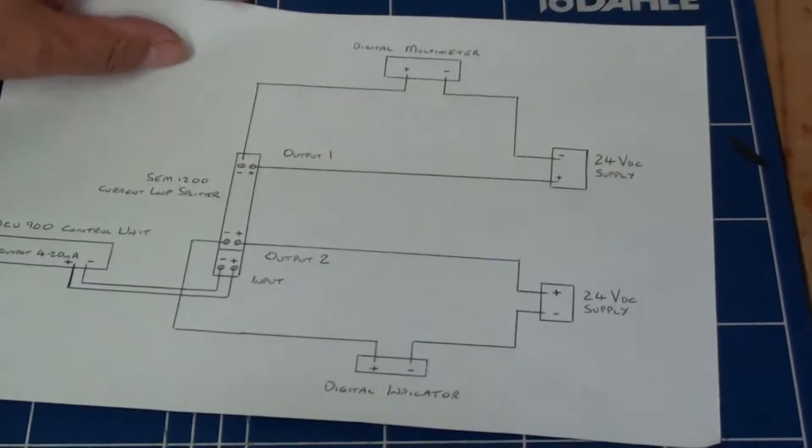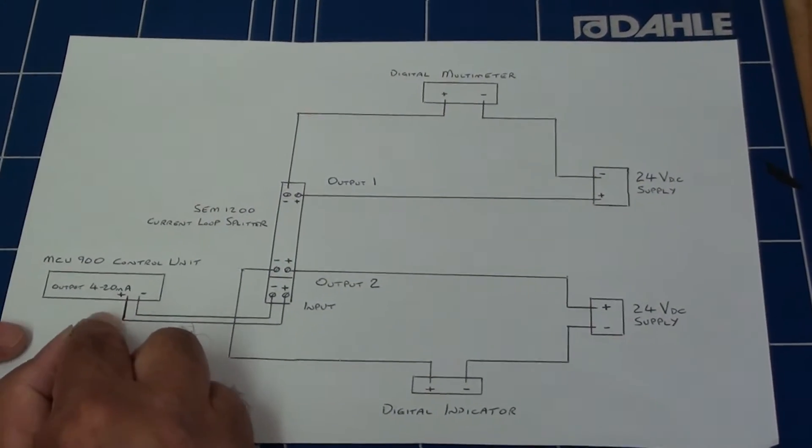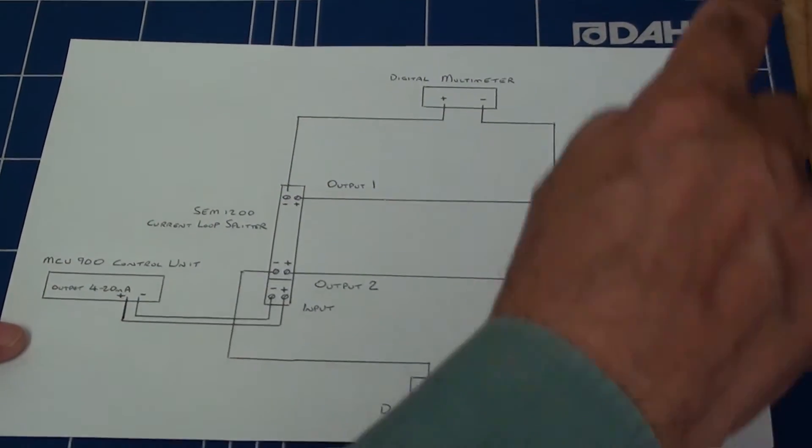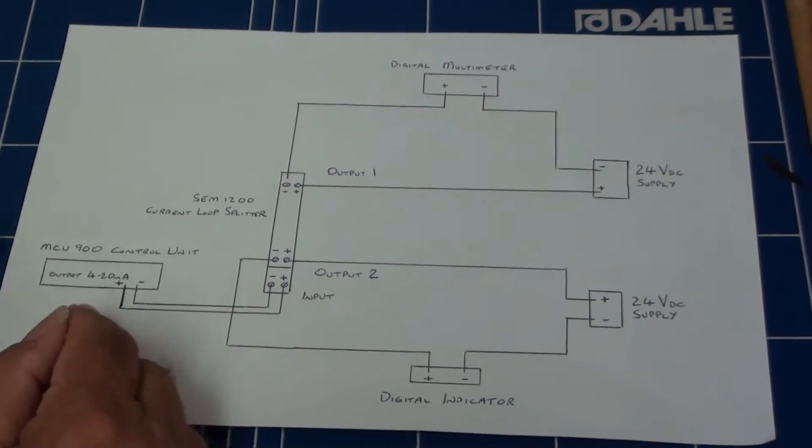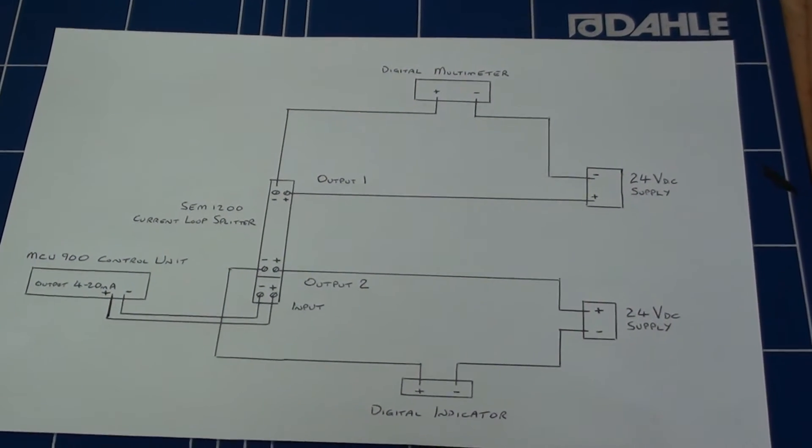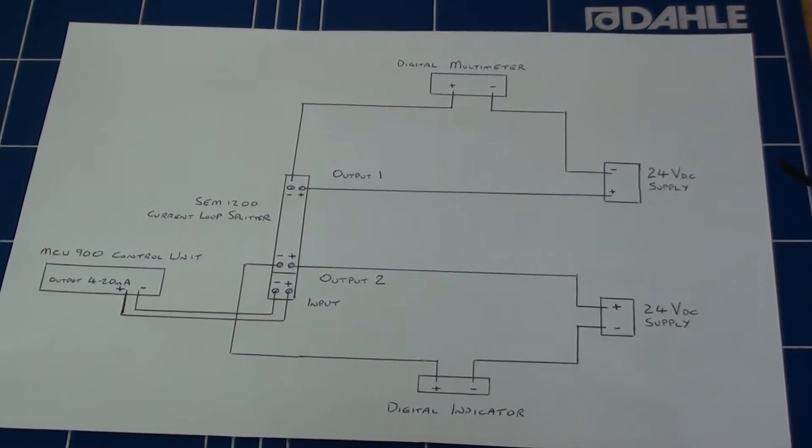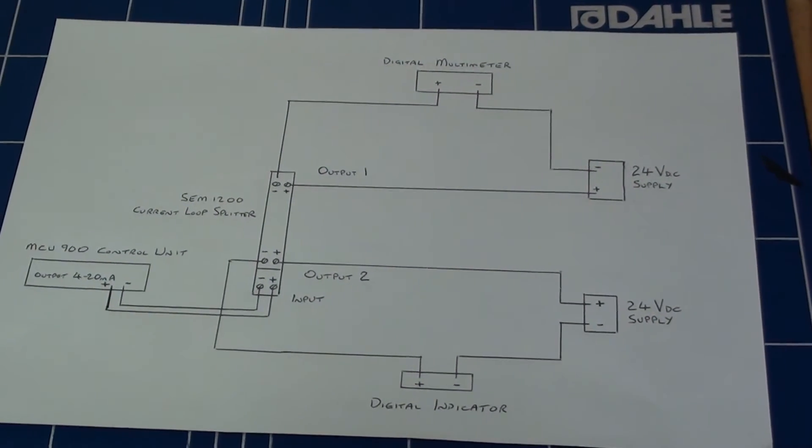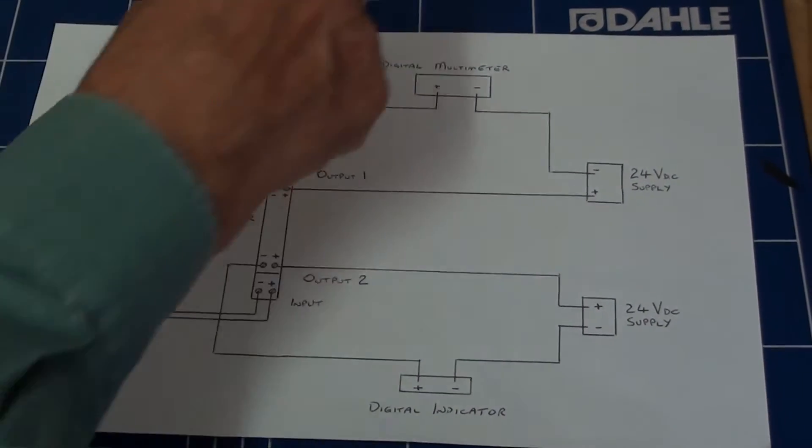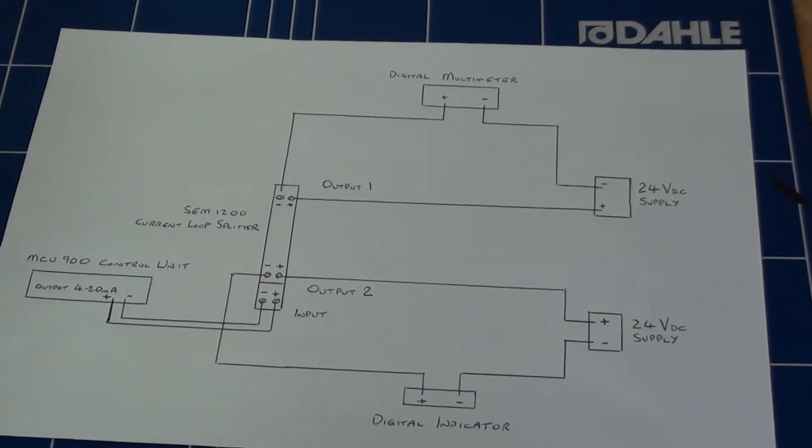If I now connect in the input signal from my simulated control unit here, the positive from the control unit goes to the positive on the loop splitter, and the negative from the control unit to the negative on the loop splitter. The terminals are down at the bottom.